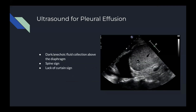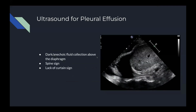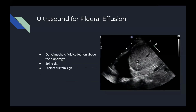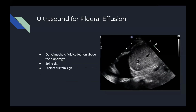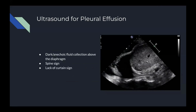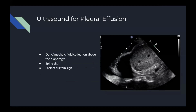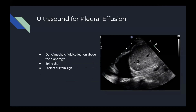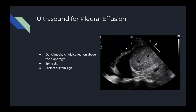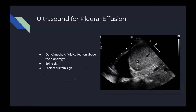Here is a diagram of a pleural effusion. You can see the dark anechoic fluid above the diaphragm — the diaphragm being the hyperechoic white line above the liver — surrounding the lungs, the lungs being the lighter color. You can also see the spine sign, where the spine extends past the diaphragm, and there is a distinct lack of a curtain sign when the patient breathes in and out.